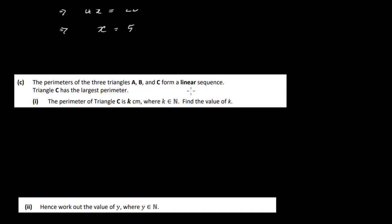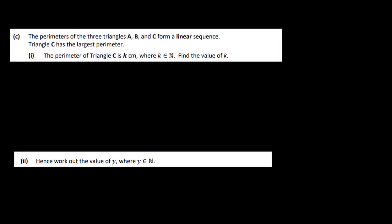The perimeters of the three triangles A, B, and C form a linear sequence. Triangle C has the largest perimeter. The perimeter of triangle A was 8, triangle B was 24. If this forms a linear sequence, the common difference is 16. So if we add another 16 to 24, we get 40. The perimeter for triangle C is 40 centimeters.